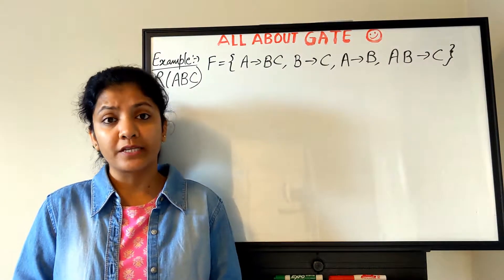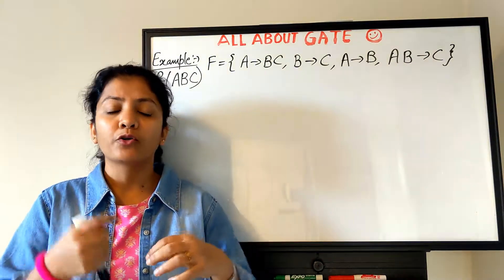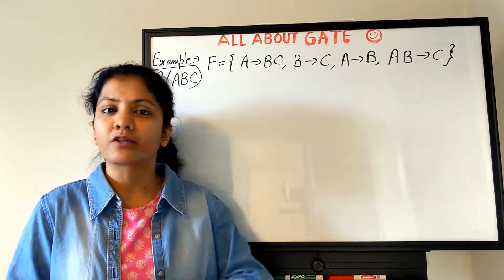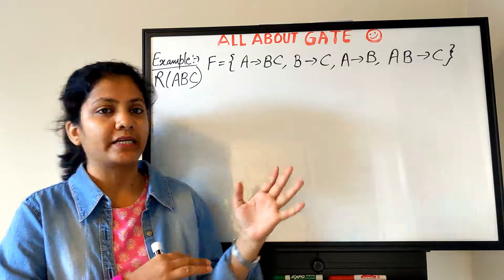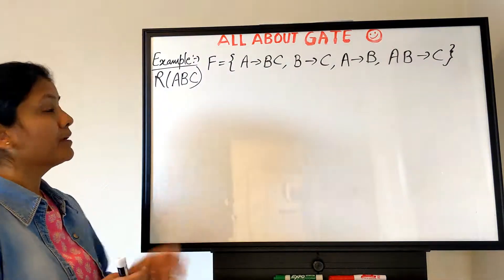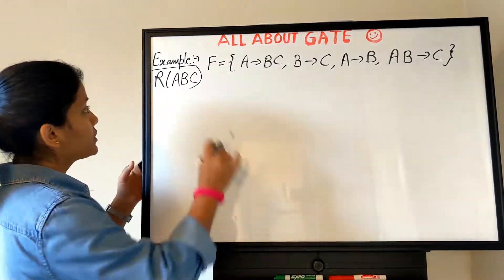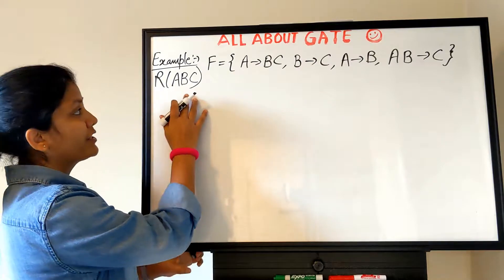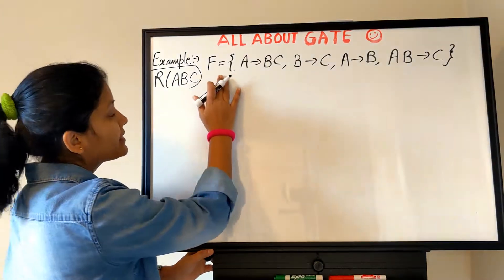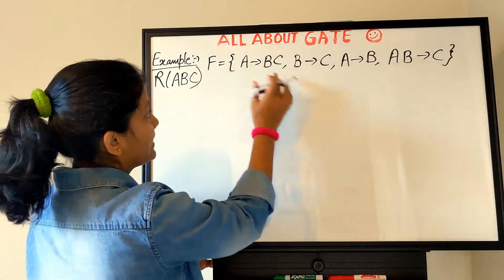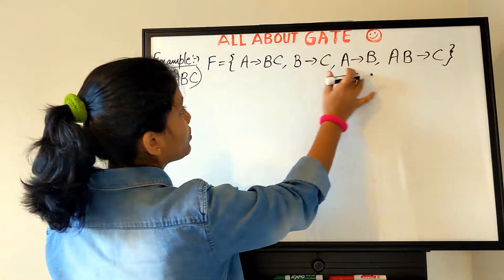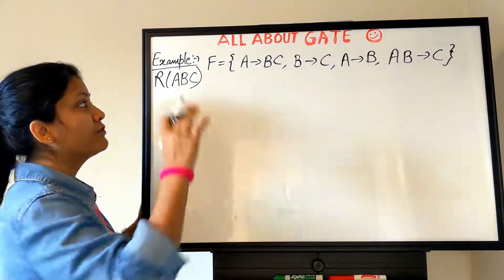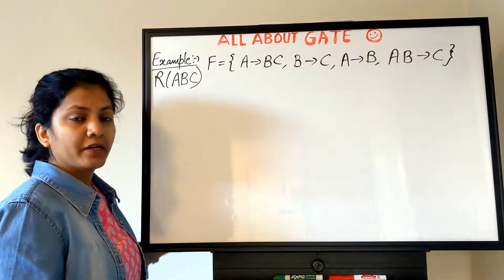Now once we have understood the procedure of how to find a minimal cover from a given FD set, let's quickly apply that in the example. We have a relation R with three attributes A, B, C. The functional dependency set is given with four FDs, and we have to find its minimal cover.